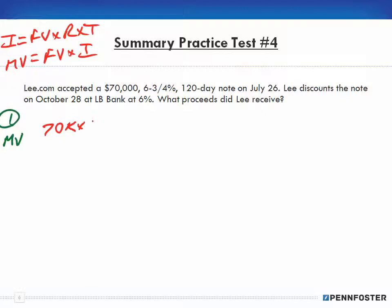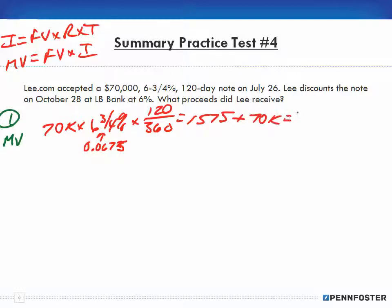Number one, we're looking for the maturity value. We take $70,000 times 6-3/4% interest times 120 days over 360. Seventy thousand times 0.0675 (that's the decimal equivalent of 6-3/4%) times 120 divided by 360, and we end up with interest of $1,575. We add that to the $70,000 to get our maturity value of $71,575.